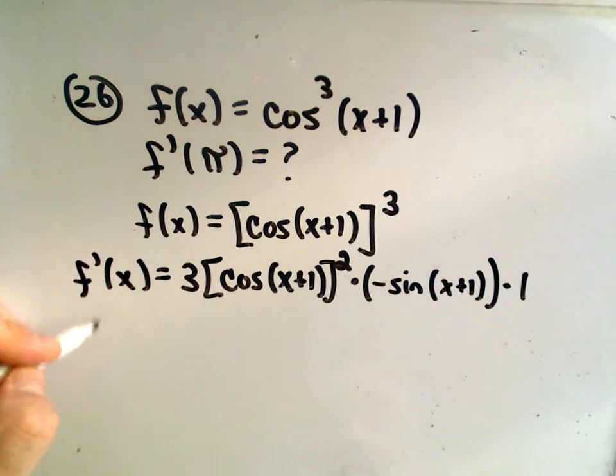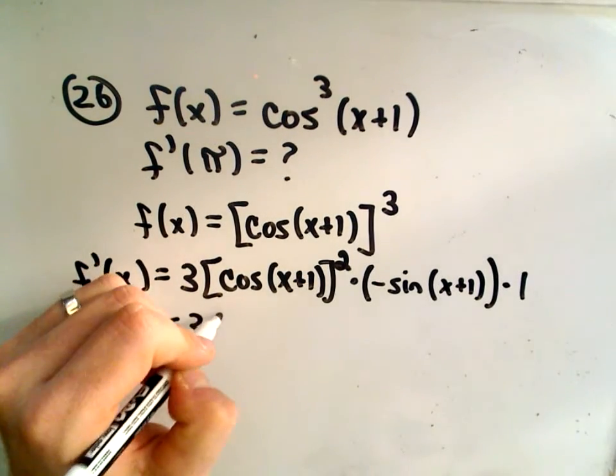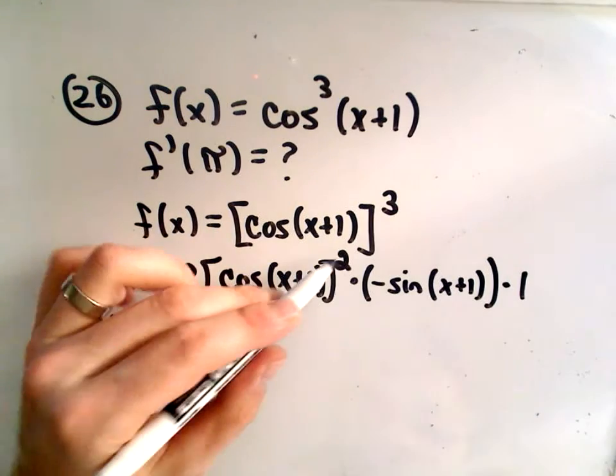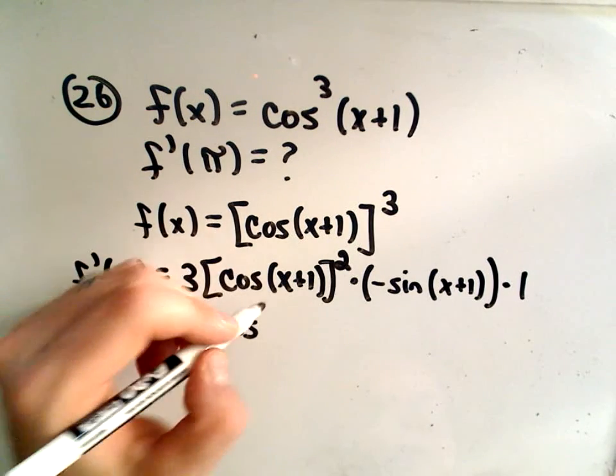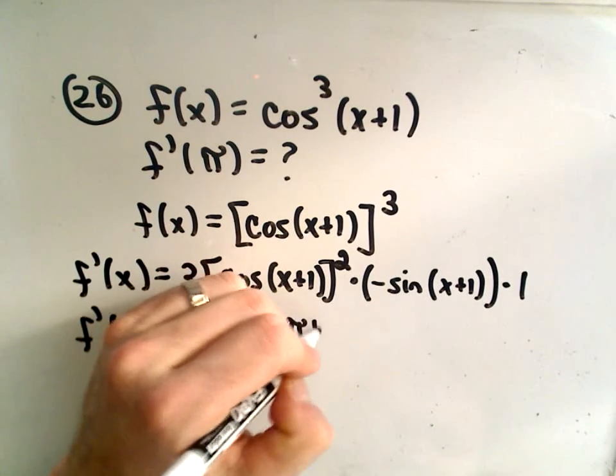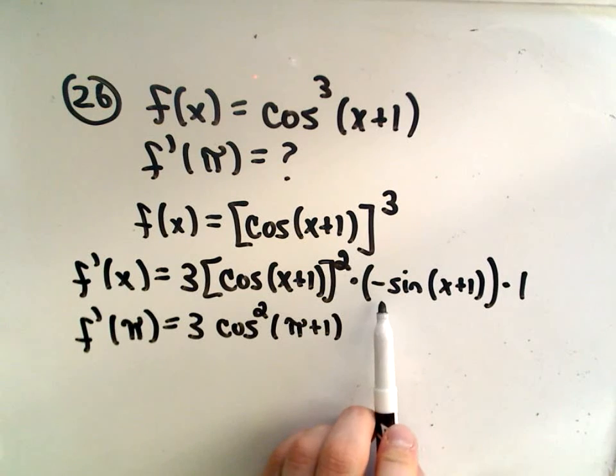Well, all we have to do then is plug in π. So it says f prime of π will be 3 times cosine. And the way they write their solutions, they pull the square back over. So cosine squared of π plus 1.